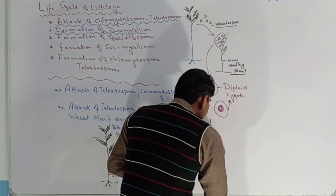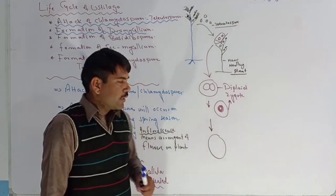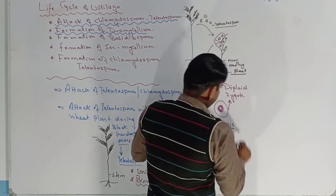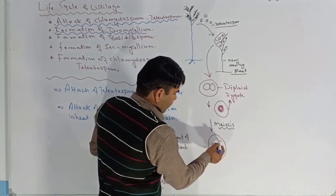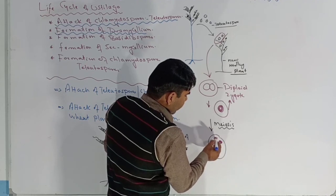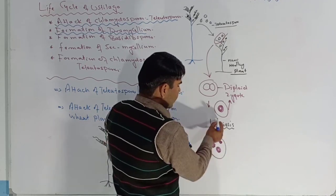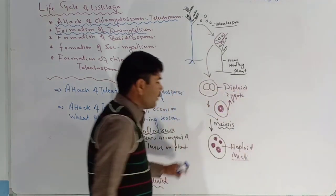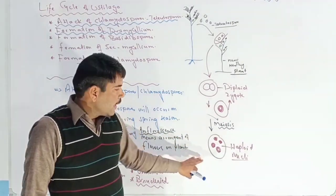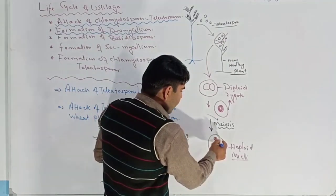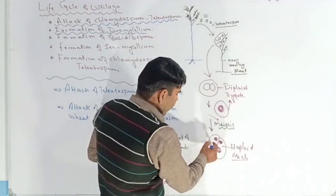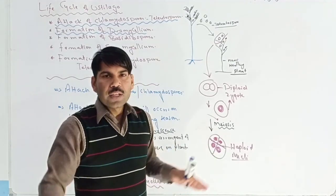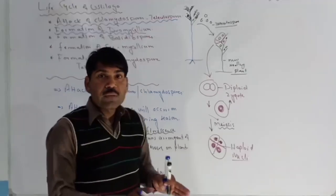The diploid zygote undergoes the process of meiosis. Meiosis results in four haploid nuclei being produced inside the zygote. Each of these four haploid nuclei is then separated by a septum, so each nucleus is converted into a separate haploid spore.